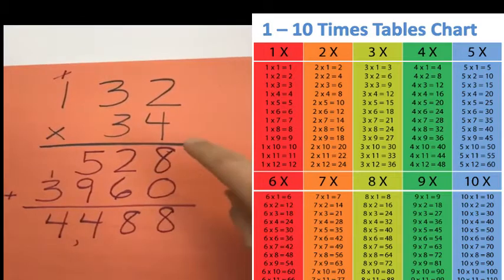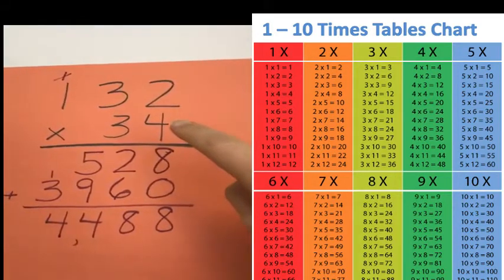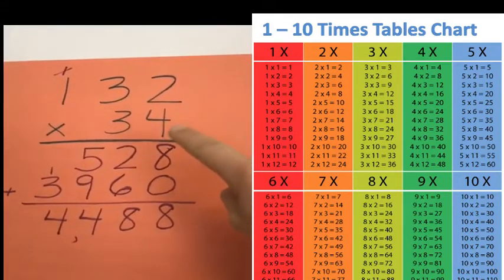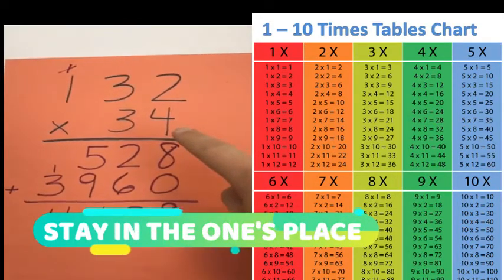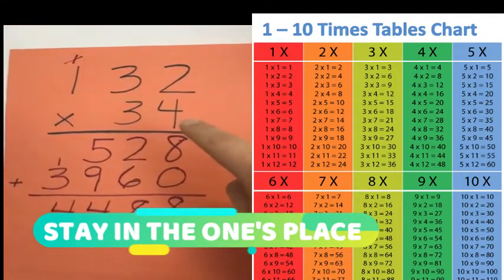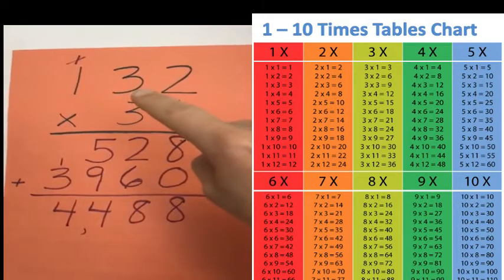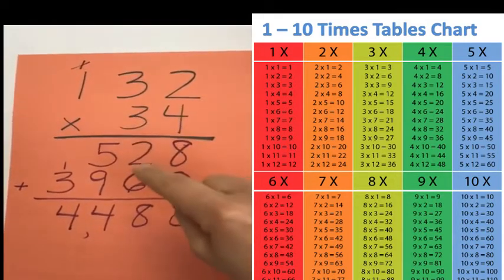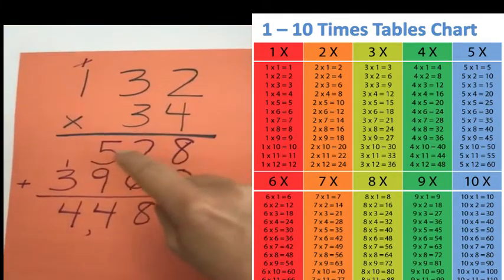We start with the ones place — we start with the four. Four times two is eight. I stay with the fours place; this is not addition, it's multiplication, so I don't move to the three yet. I stay with four and go four times three, which is twelve. So I write a little one, carry the one to the next place, and write the two — that's twelve.